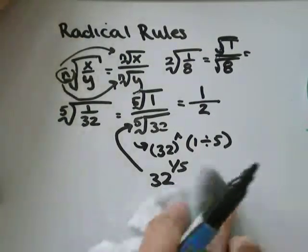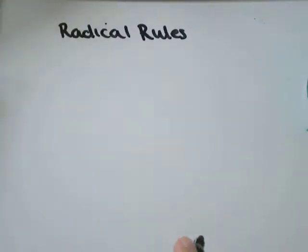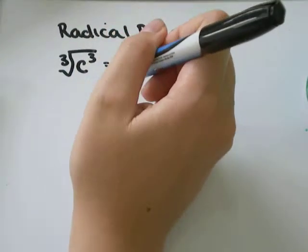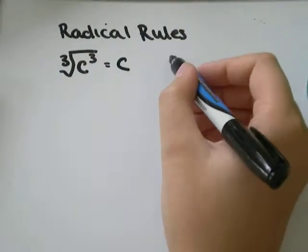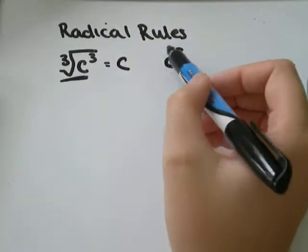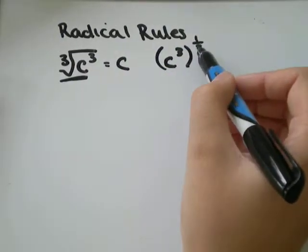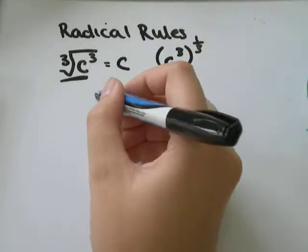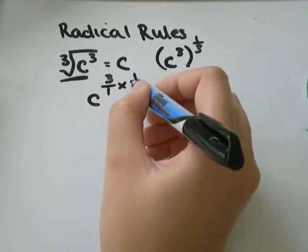Sometimes you might have to use a different rule. Just a little note: if you have the cubed root of some number c cubed, that's always just equal to c. I can prove it, because that would be the same as c cubed to the exponent of 1 over 3 — since the cubed root is the same as the exponent of 1/3. When we have something to an exponent, to an exponent, we multiply the exponents. So that would be c to the power of 3 times 1/3.